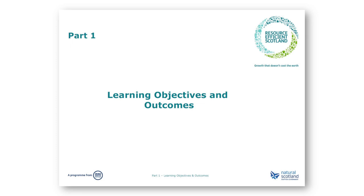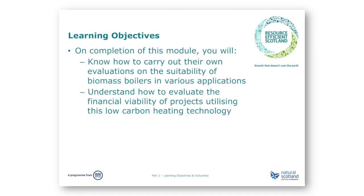Part 1: Learning Objectives and Outcomes. This e-module is designed for public sector energy managers who want to know more about heat generation using biomass. The e-module will be split into several smaller parts, each of which you can go through and review at your convenience. We will also provide links to references and resources for more information. It is assumed that you have some familiarity with the technology, and this presentation provides an overview of the main technical and financial considerations when looking to install a biomass boiler. The objectives of this module are for you to gain sufficient understanding to carry out evaluations on the suitability of this technology in various applications, and understand how to evaluate the financial viability of projects utilising this low carbon heating technology.